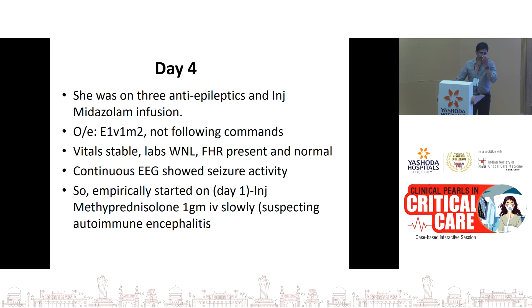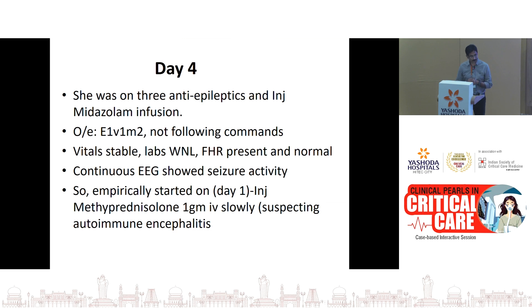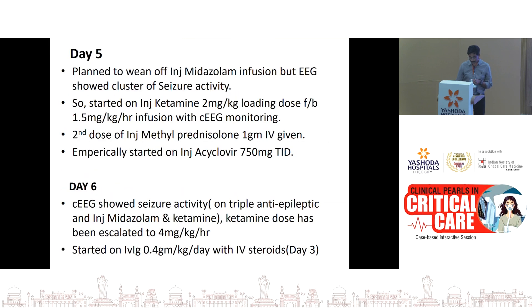In new-onset refractory status epilepticus, 70% of the time the cause is unknown — we call it cryptogenic. In the remaining cases, we consider whether it is viral or autoimmune encephalitis. In this patient, we considered it likely cryptogenic or autoimmune by default, as there was no evidence of encephalitis. We started methylprednisolone as a disease-modifying drug. We were giving antiepileptic drugs to suppress seizure activity and immunomodulating drugs — methylprednisolone and IVIG — to address the underlying cause. Methylprednisolone 1g was given for three days.